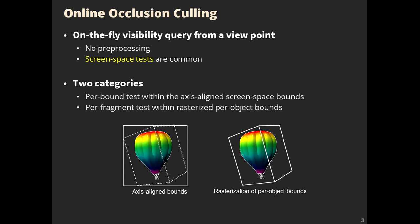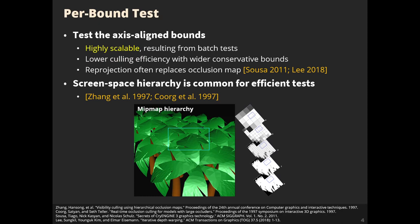One is full-bound test within the axis-aligned screen space bounds. The other is full-fragment test within rasterized full-object bounds. The classic occlusion culling technique uses the full-bound test.